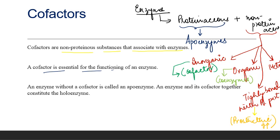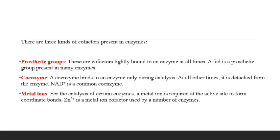A cofactor is essential for the functioning of an enzyme. An enzyme without a cofactor is called an apoenzyme. An enzyme and its cofactor together are called a holoenzyme. Prosthetic groups are cofactors tightly bound to an enzyme at all times, while a coenzyme binds to the enzyme only during catalysis and otherwise remains separated.